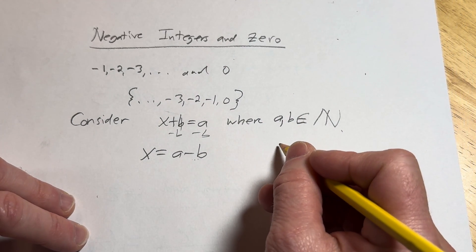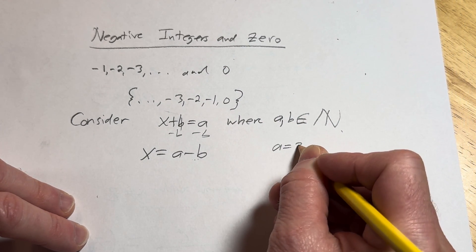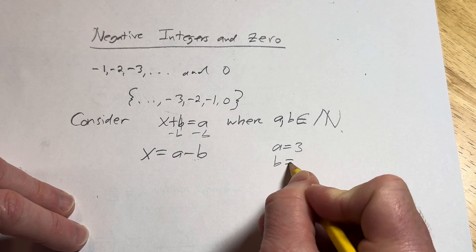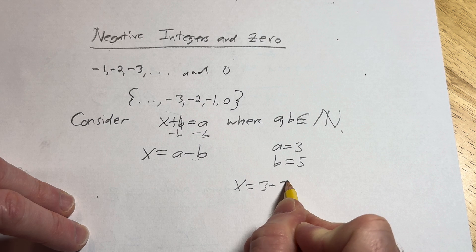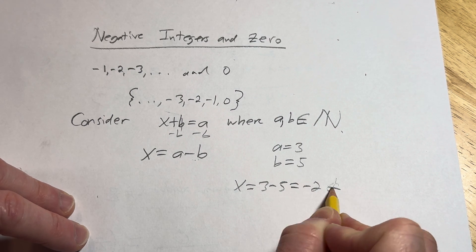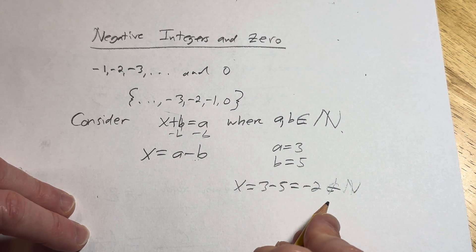For example, if a is 3 and b is 5, then you would get x equals 3 minus 5, which is negative 2. That is not in the set of natural numbers.